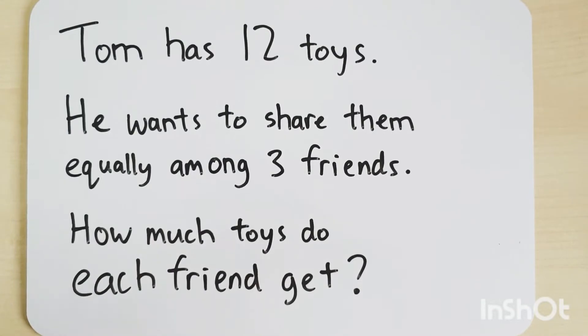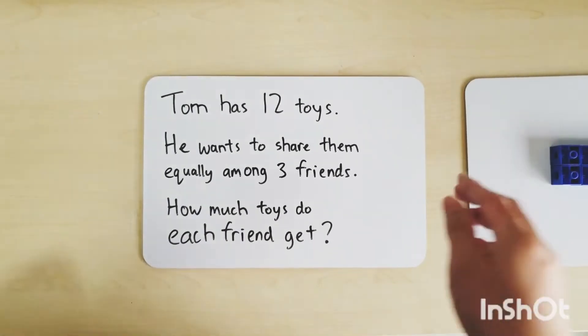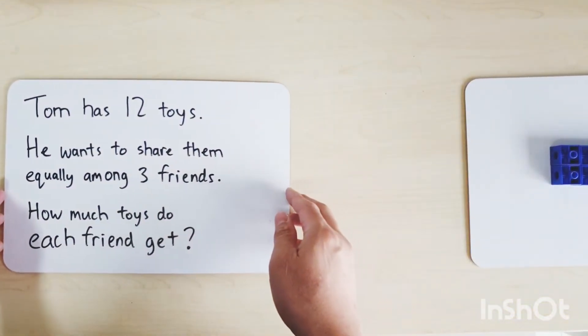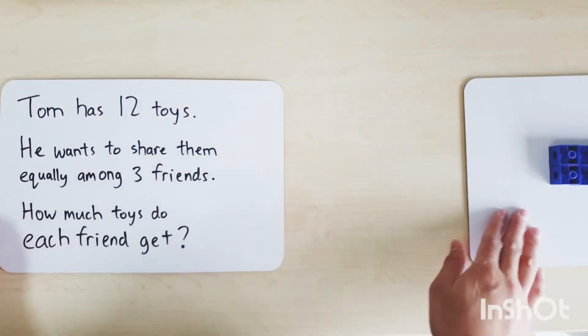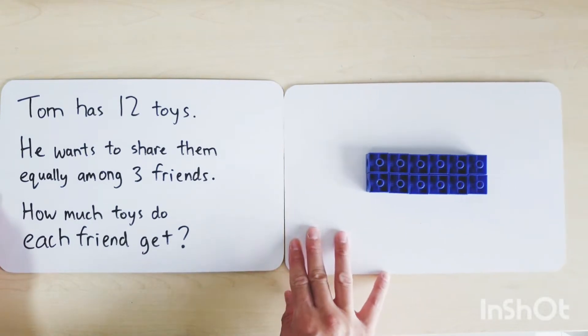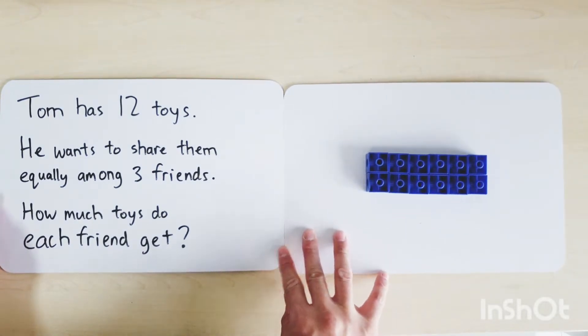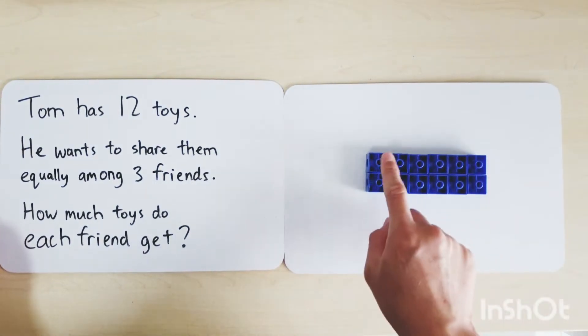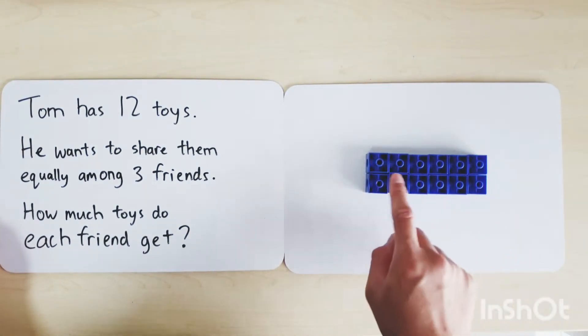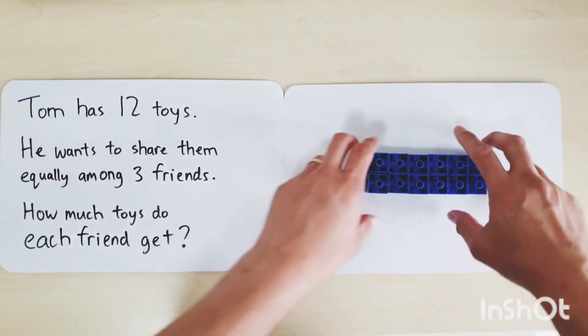Let's use these cubes as an example of toys. There are 12 toys: 1, 2, 3, 4, 5, 6, 7, 8, 9, 10, 11, 12.